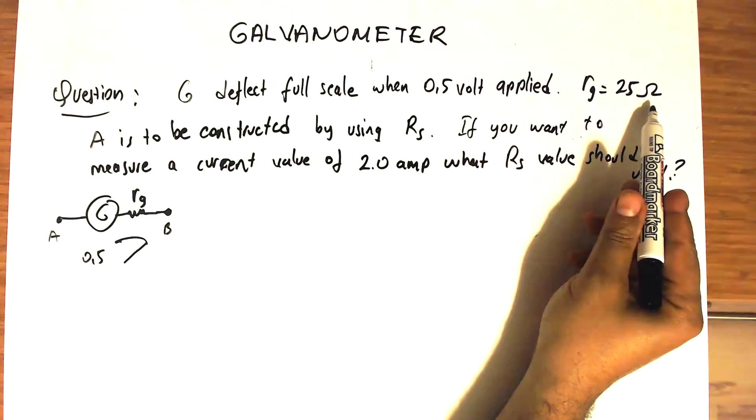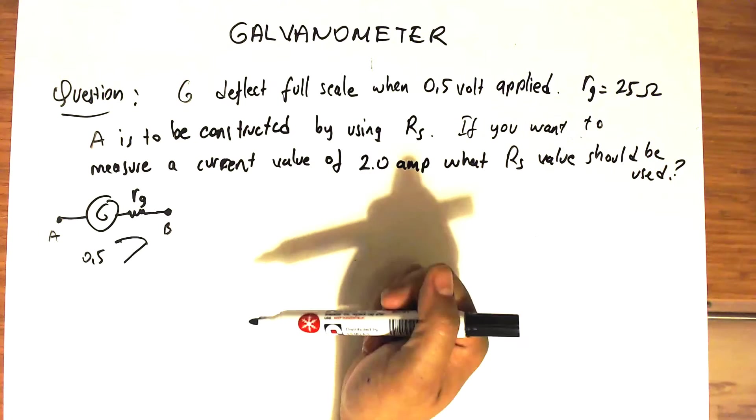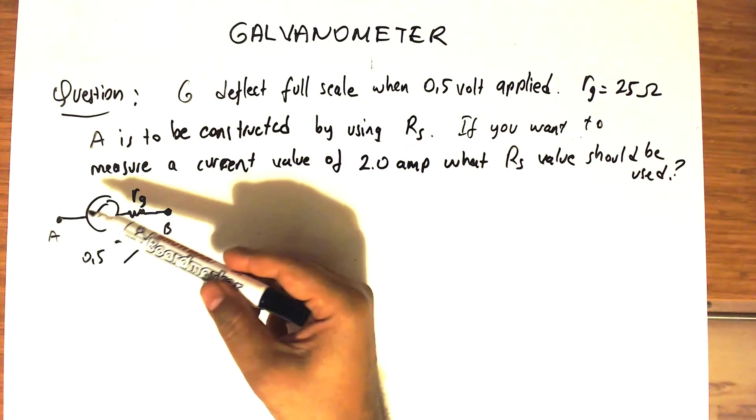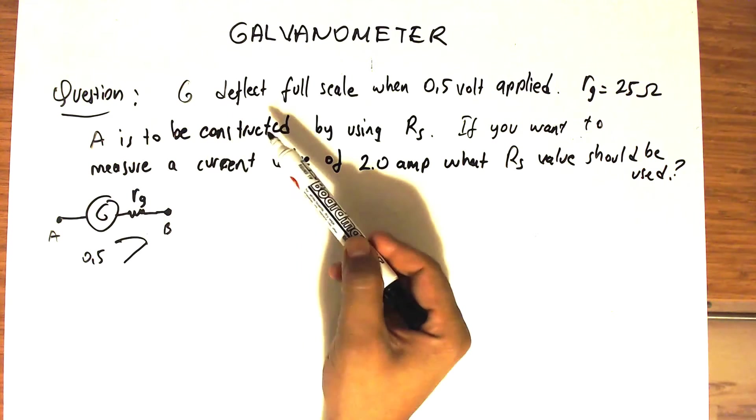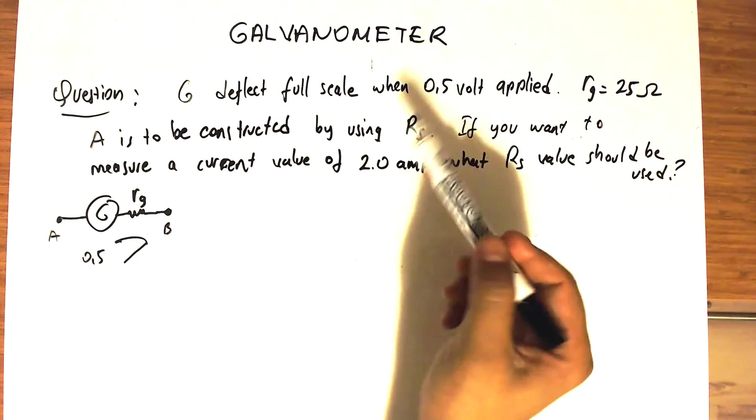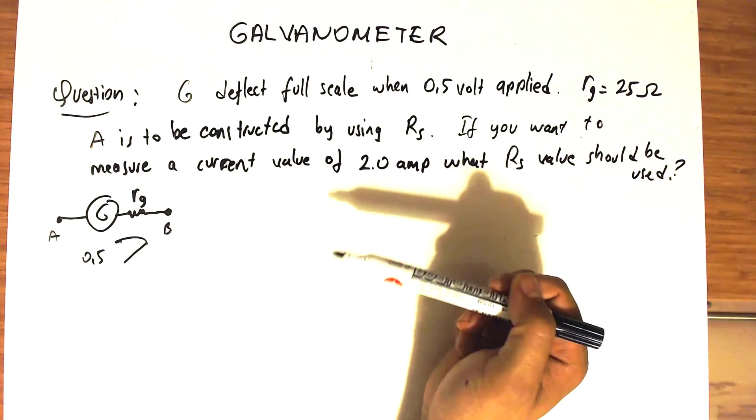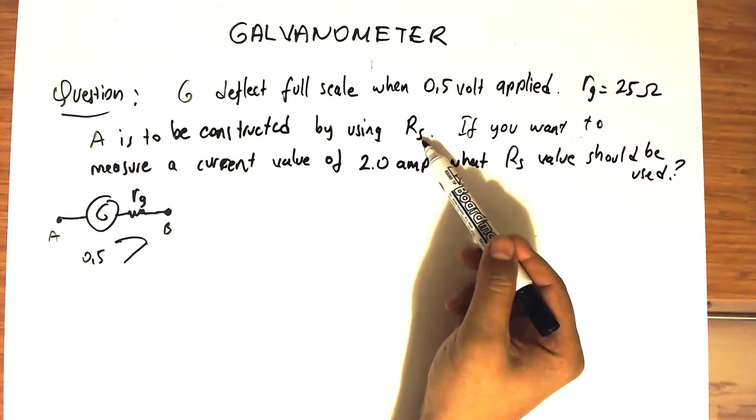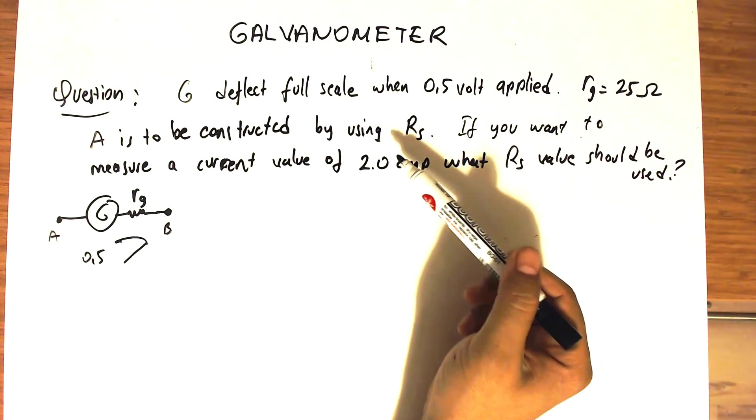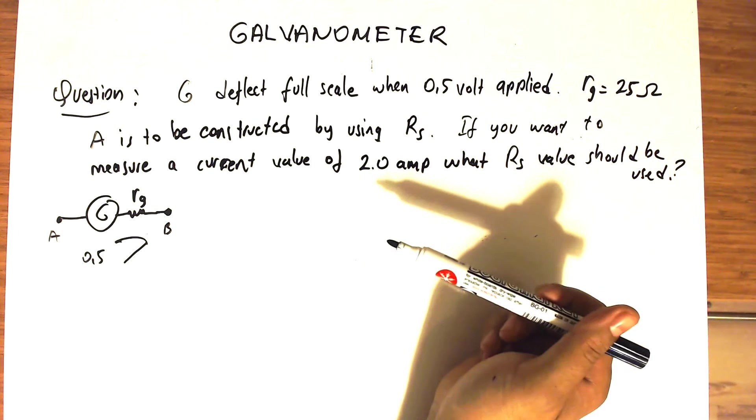Then the problem says this galvanometer is to be used as an ammeter or amperometer by using an auxiliary resistance, which we call the shunt resistance Rs.